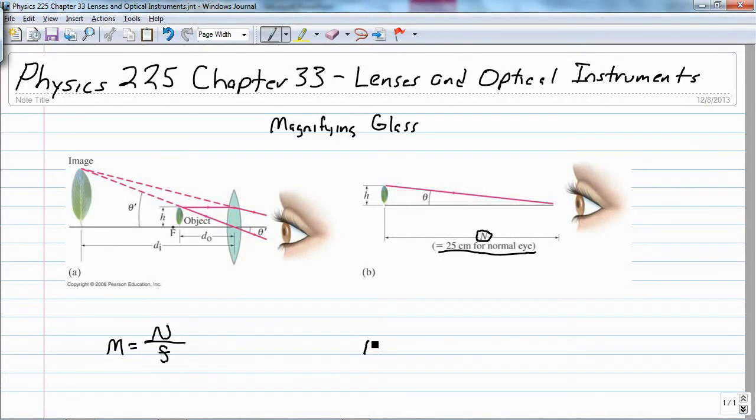If we go to focus in, we actually stress our eyes and try to actually focus in on the image, then we get a little bit of extra magnification, about 1 plus n over the focal point.